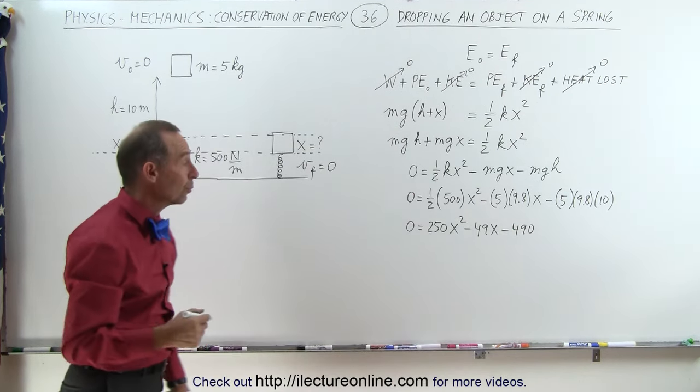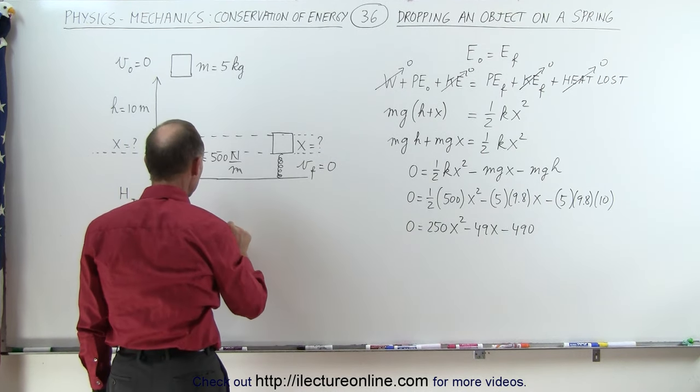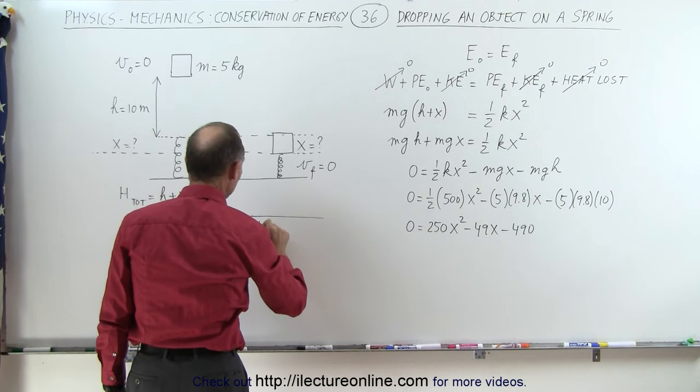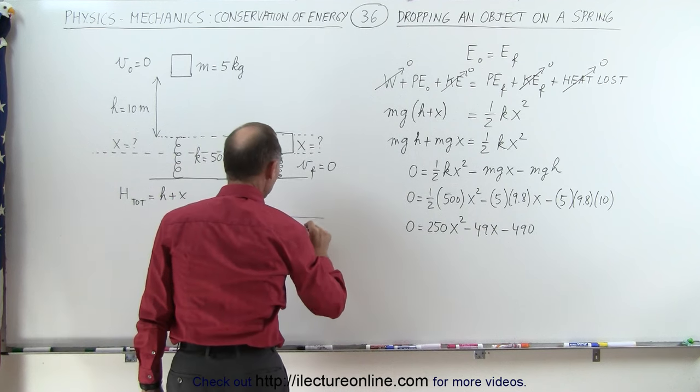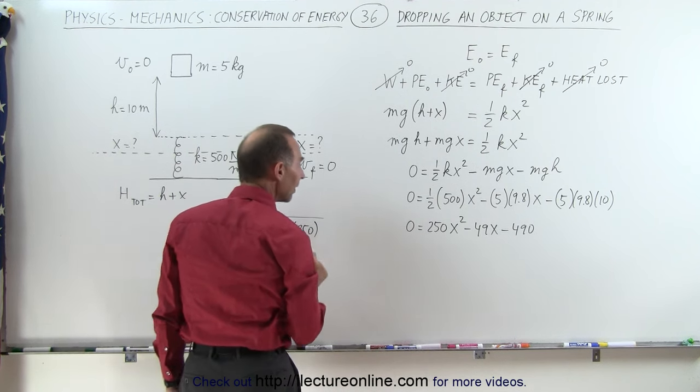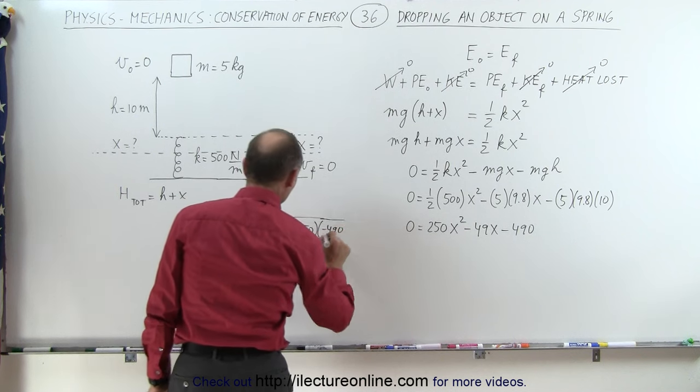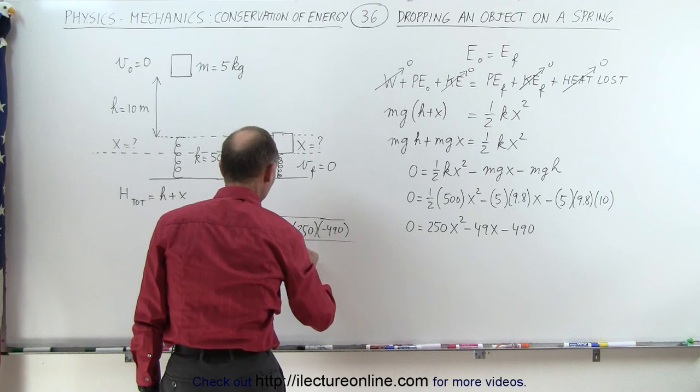And that's a quadratic equation that we can solve. So x equals minus b which is 49 plus or minus the square root of 49 squared, b squared, minus 4 times a which is 250 times c which is minus 490 and the whole thing divided by 2 times a which is 2 times 250.